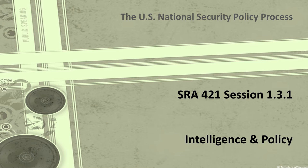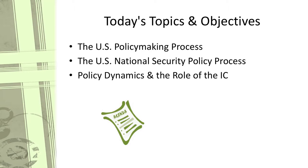S.R.A. 421, Session 1.3.1: Intelligence and Policy, the U.S. National Security Policy Process. In 1.3.1 we will be examining the interplay between intelligence, intelligence activities and operations, and policy. We will look at the U.S. policymaking process generally, then focus a bit on U.S. national security policy, and finally look at the question of policy dynamics and the role of the intelligence community.